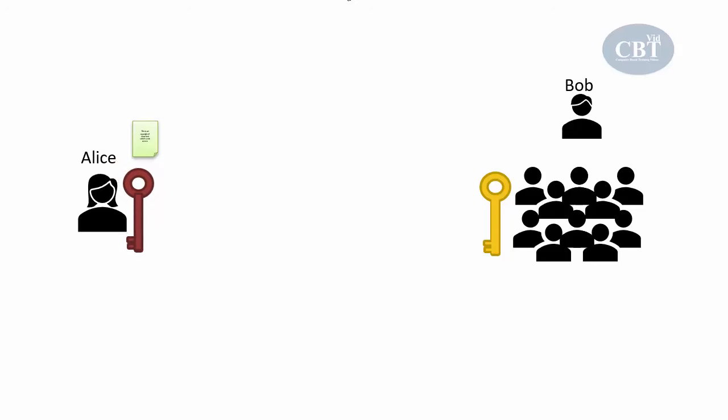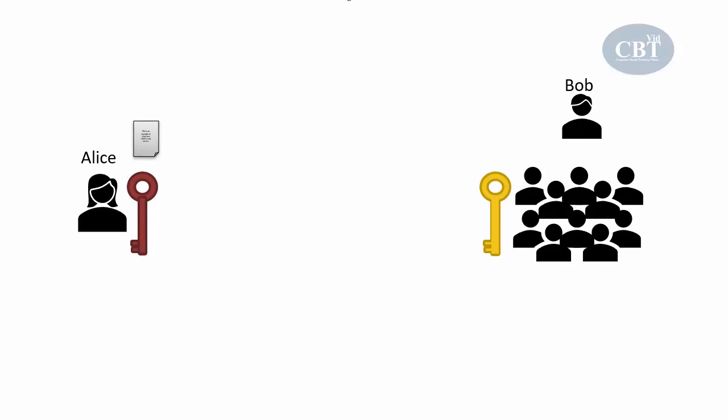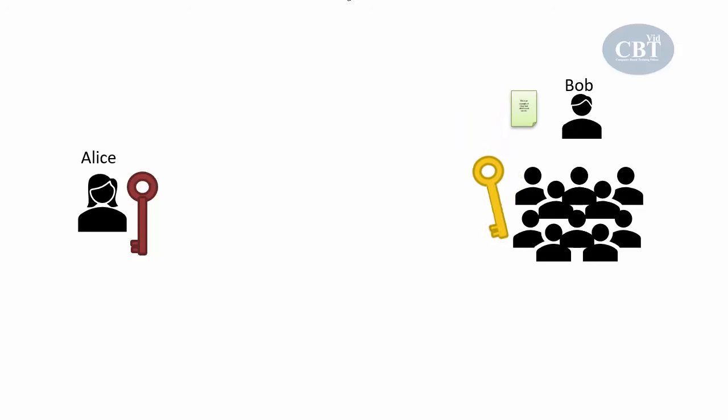Now, what if Alice encrypts the message using her private key? When she encrypts the message using her private key and forwards it to Bob, who can decrypt that message? Well, the whole concern here is not the confidentiality of the message — it's not about encrypting so that no one can see it. The whole concern is to make sure the message came from that person, from the right person.